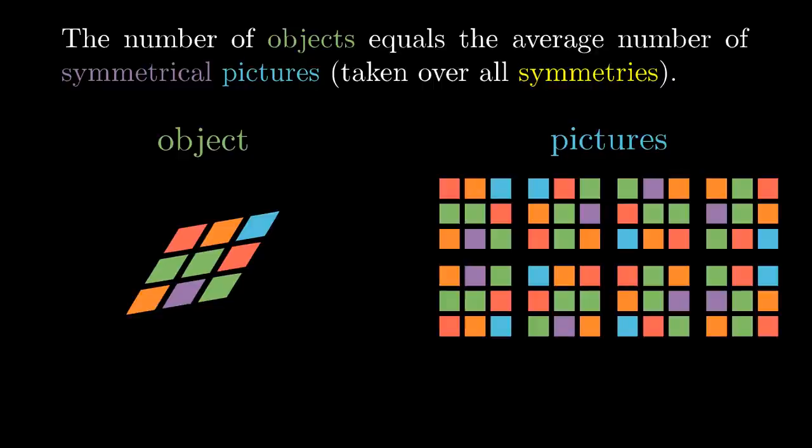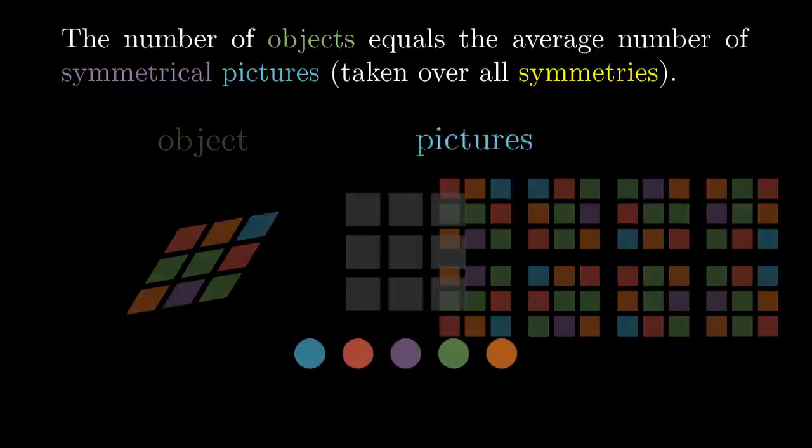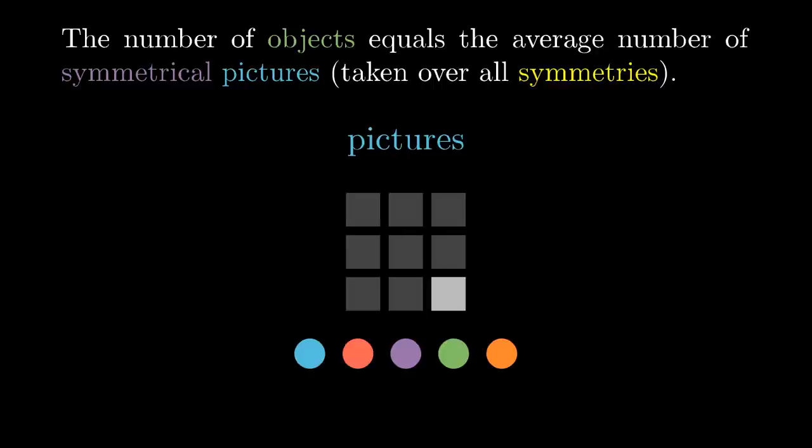Pictures are usually relatively easy to count, as we don't have to care about the symmetries. In our case there are 9 squares in the table, we have 5 possible colors for each square, so the total number of all pictures is 5 to the power of 9. This number will be useful later.